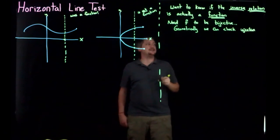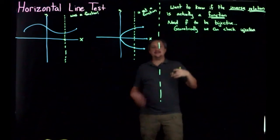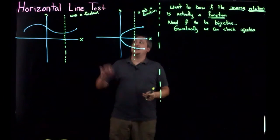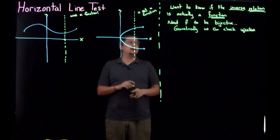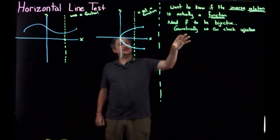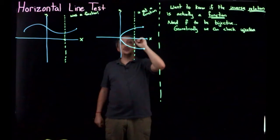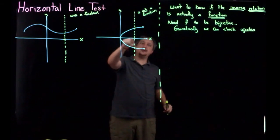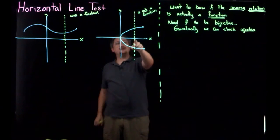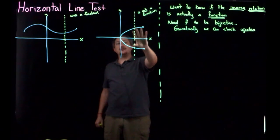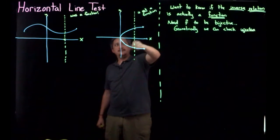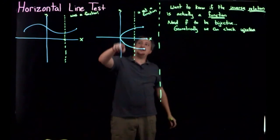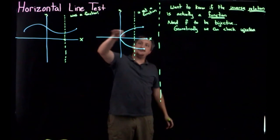And we can check whether something is injective in the same way, the same idea, as we did whether it was a function. Because remember, to check injective, what that means is that each output, each y value, has exactly one input, has exactly one x value. So before we want to check for the function, the vertical line test, we were checking each input for one output. So we fixed the input, we checked all the outputs.